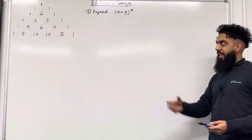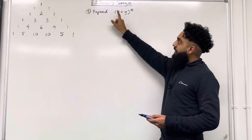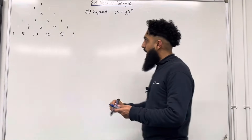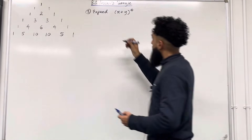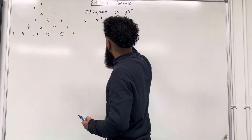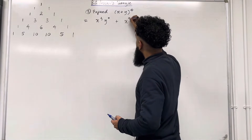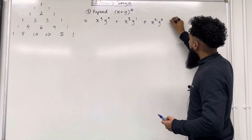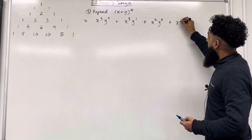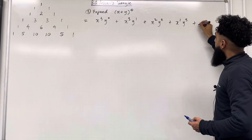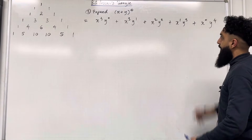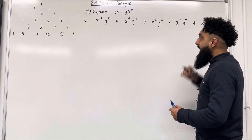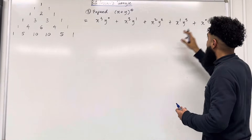Right, on to the final example — Example 3: we're going to expand (x + y) to the power of 4 using Pascal's Triangle. Let's first list the terms: x⁴y⁰ + x³y¹ + x²y² + x¹y³ + x⁰y⁴. Again we're decreasing the powers of x by 1 but increasing the powers of y by 1 each time.